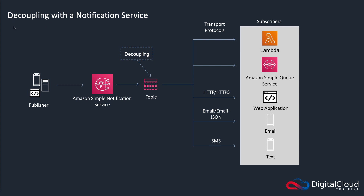With decoupling, you're taking one application component on the left and separating it from another component. These components still need to communicate and send information to each other. In this case, the Simple Notification Service is used — it sends notifications using what's called a topic. So these application components are not talking directly to each other; they talk via SNS. The publisher sends a message to a topic and then the subscribers receive it.